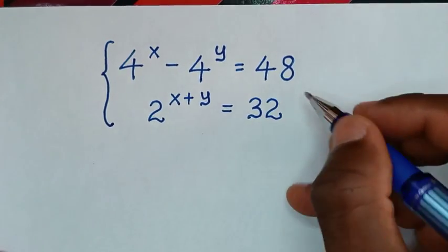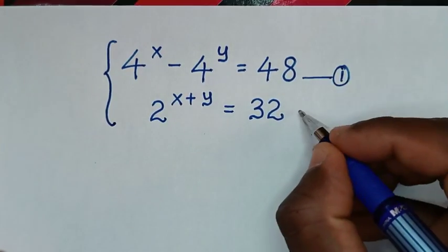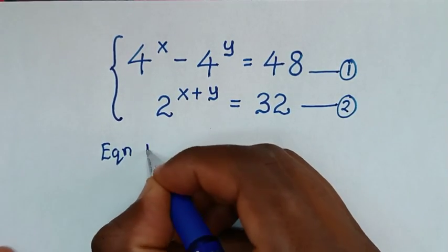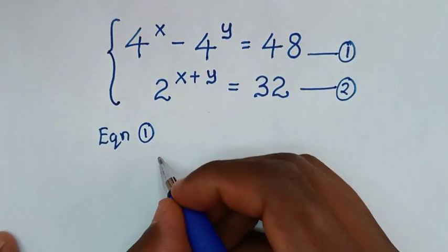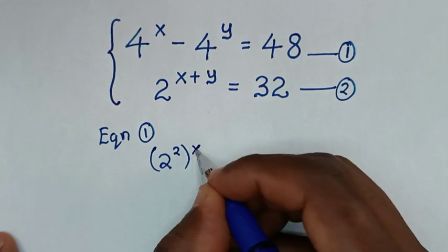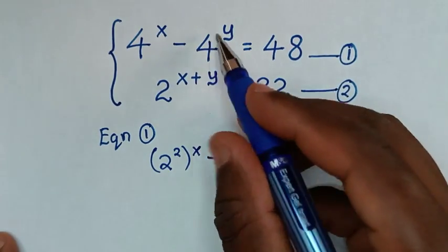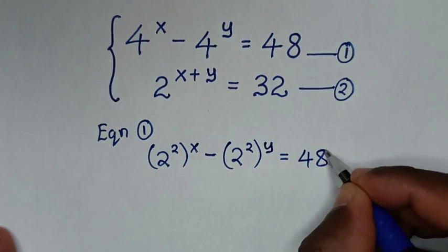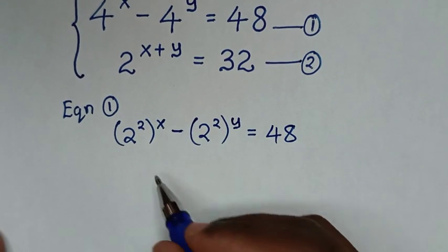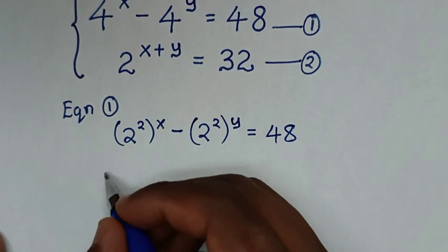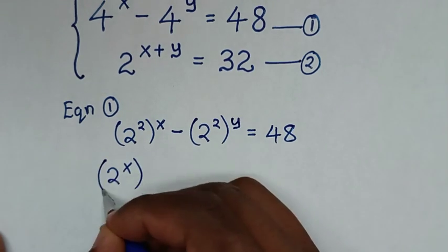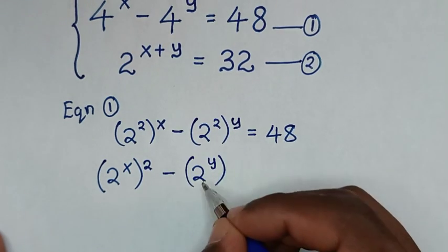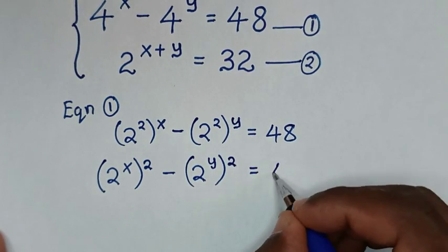In the first step, we will let the first expression as equation 1 and the second as equation 2. From equation 1, which is 4 power of x minus 4 power of y equals 48, we rewrite 4 as 2 squared. So it becomes 2 squared bracket power of x minus 2 squared bracket power of y is equal to 48.